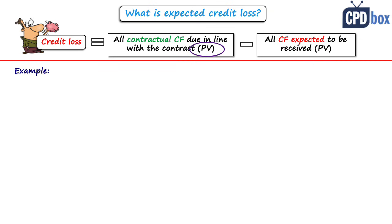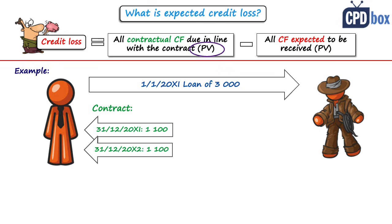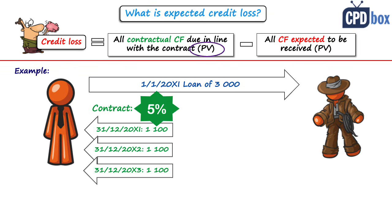Let me illustrate this on a simple example. Imagine that you lend 3,000 currency units to Johnny, and in line with the contract, Johnny will repay you back 1,100 on 31st December 20X1, and then the same amount at the end of 20X2 and 20X3. So in total he will pay 3,300 back, which gives you interest of 300 and an effective interest rate of approximately 5%.